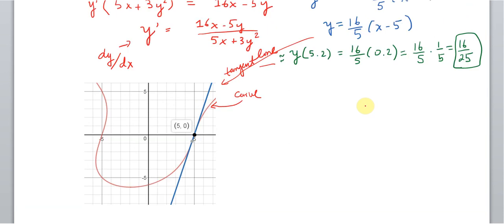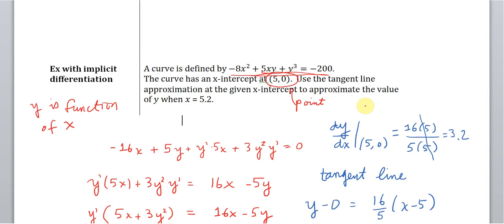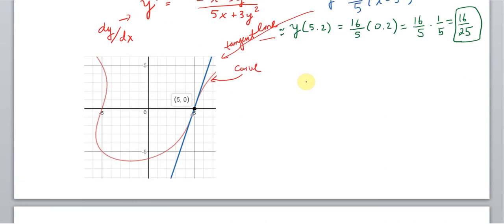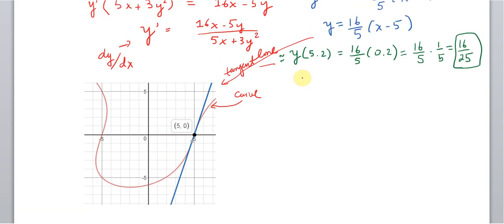All you have to do is plug 5.2 in for x. And then you would have a fun cubic equation to solve for. And it'd be nice and fun and messy. Or we could use the method that we did, which is just using derivatives and using the tangent line approximation.